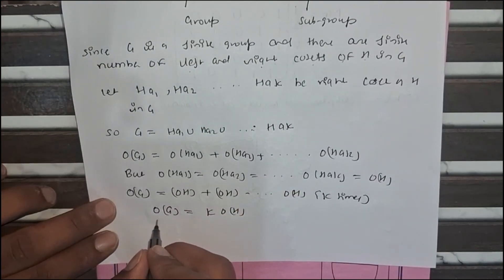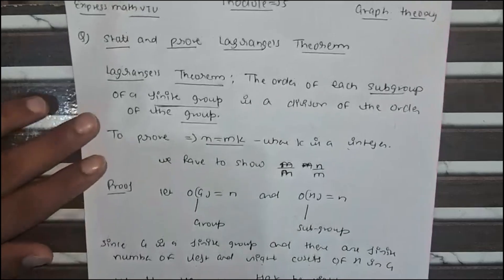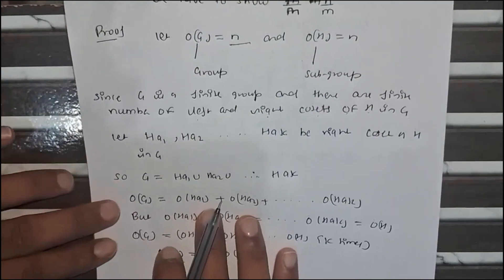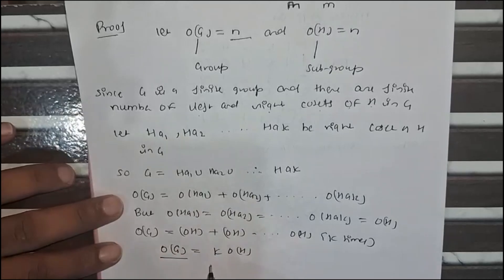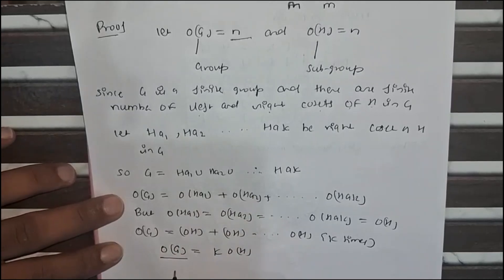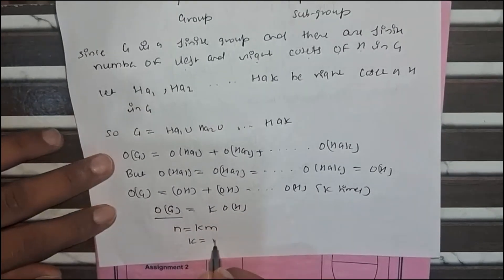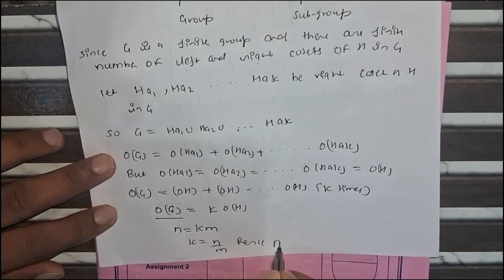So what is the order of g? Here order of g equals n and order of h equals m. So k equals n by m. Hence proved.